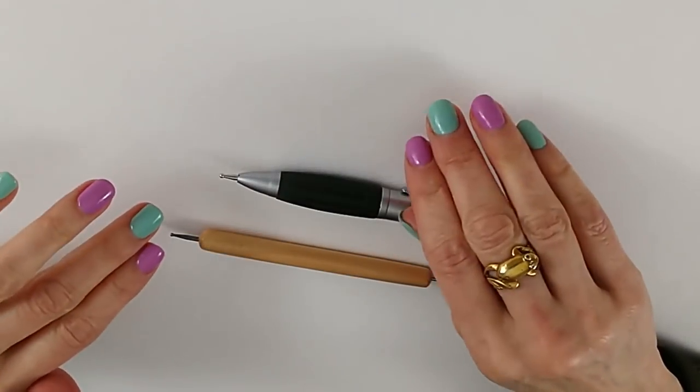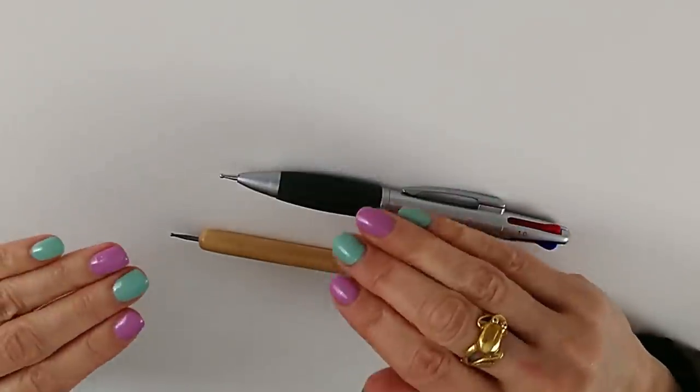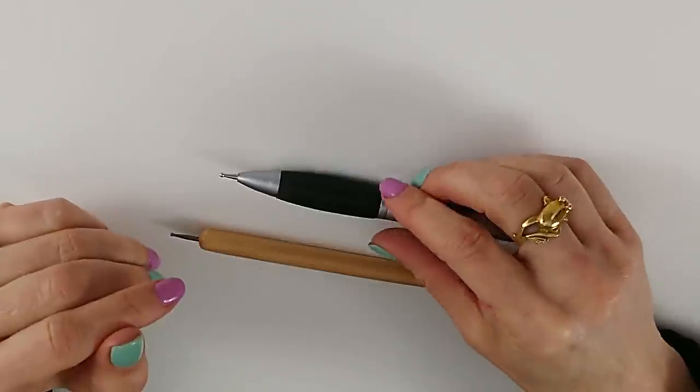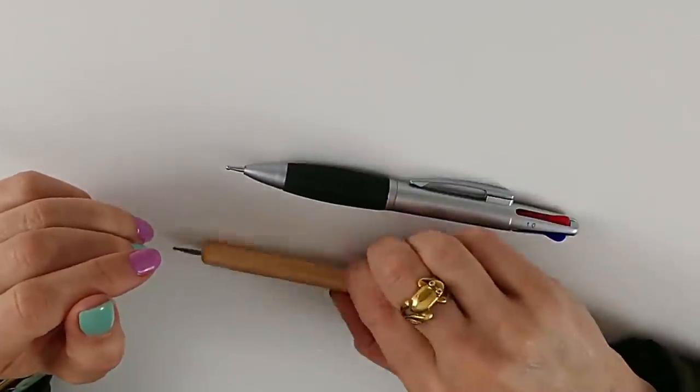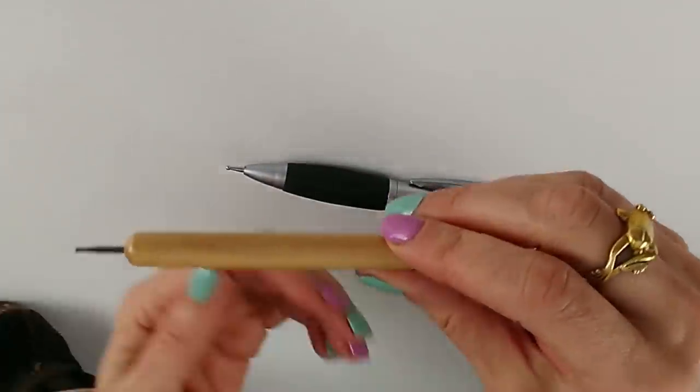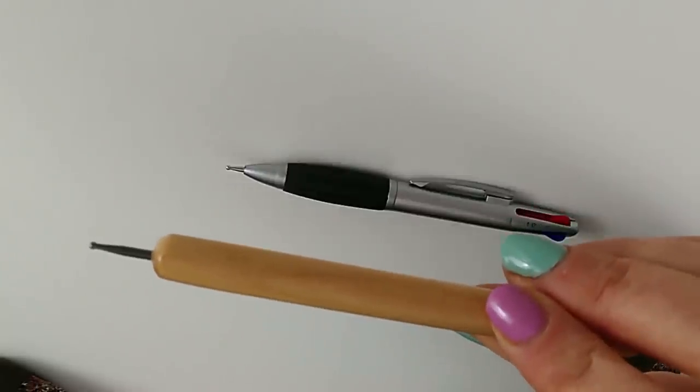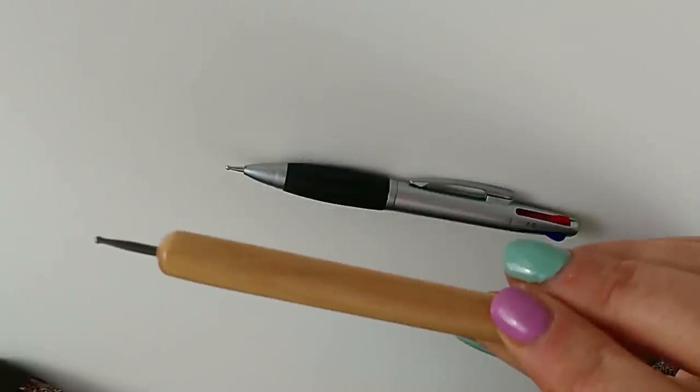So what are embossing tools? They're meant actually to dent paper. They're used in all sorts of crafts, but they can also be used for fine art. So what you've got essentially, and this is the most common type, what you have is a point that has a little ball on the end.